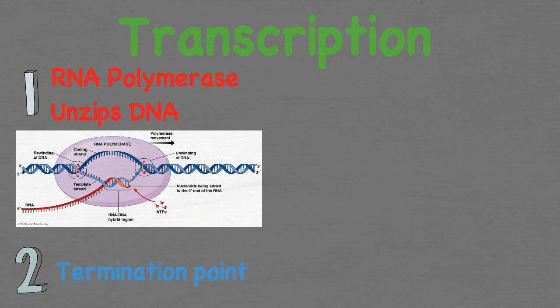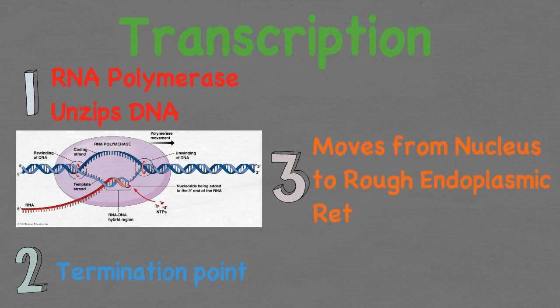At this point the RNA polymerase detaches from the DNA and releases the RNA molecule. Once the mRNA molecule is released, the DNA completely rewinds into a double helix, and the mRNA moves from the nucleus to the rough endoplasmic reticulum, thus completing the process of transcription.